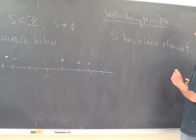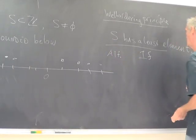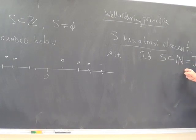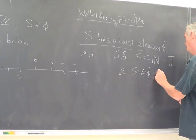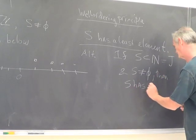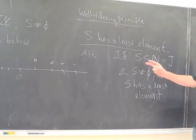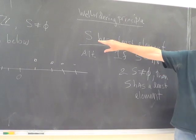Usually the well-ordering principle is stated as: if S is a subset of the natural numbers — the book uses the letter J for the natural numbers, I've used the blackboard bold N — and S is not empty, then S has a least element. This alternate version is a special case because the integers are bounded below by zero, so this case follows from the stronger case.